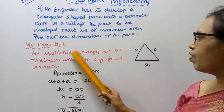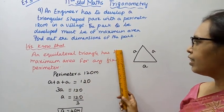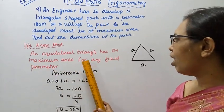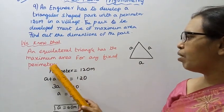We know that an equilateral triangle has the maximum area for any fixed perimeter.